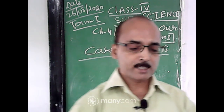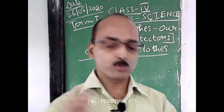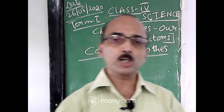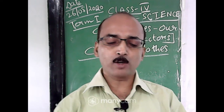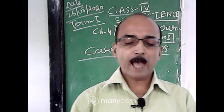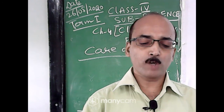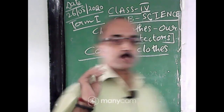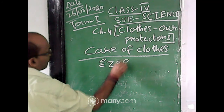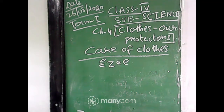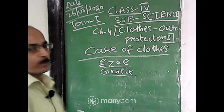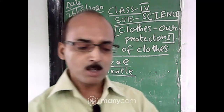Here is the care we should take. Number one: always use a good quality soap and detergent to wash clothes. Number two: wash, dry, and iron the clothes properly. Number three: wash woolen clothes with liquid detergent made especially for woolen clothes. You can use 'Easy' or 'Gentle' — these liquid detergents are good for delicate and expensive woolen clothes.